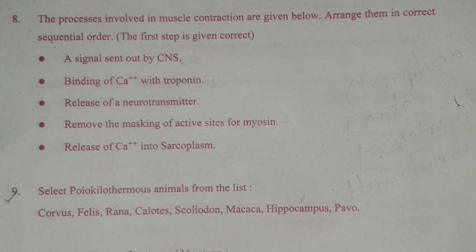Question 9 continued: The processes involved in muscle contraction are given below. Arrange them in correct sequential order. The first step is given. Answer: 1. A signal sent out by CNS. 2. Release of a neurotransmitter. 3. Release of Ca++ into sarcoplasm. 4. Binding of Ca++ with troponin. 5. Remove the masking of active sites for myosin.